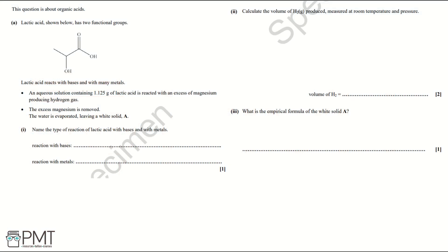This question is about organic acids. Part A: lactic acid has two functional groups. Lactic acid reacts with bases and with many metals. An aqueous solution containing 1.125 grams of lactic acid is reacted with an excess of magnesium producing hydrogen gas. The excess magnesium is removed and the water is evaporated, leaving a white solid.